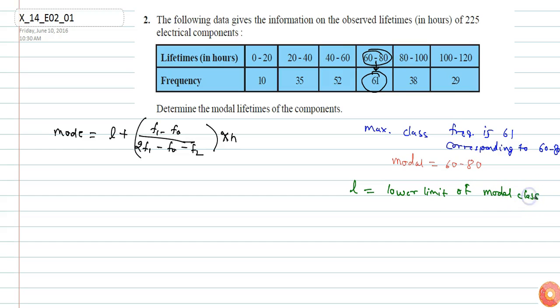The lower limit of modal class is 60, so the value of L will be 60. Now h is the interval or class size, which is the upper limit minus lower limit of modal class. So the class size is 80 minus 60.